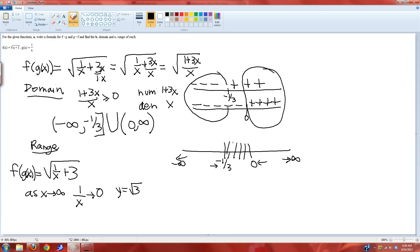And the same thing is going to happen as negative infinity. As x goes towards negative infinity, same thing. If I put a negative one million underneath a one, it's still going to go to zero. It's just going to go to zero from the other side. And then your function will still be going towards root three.